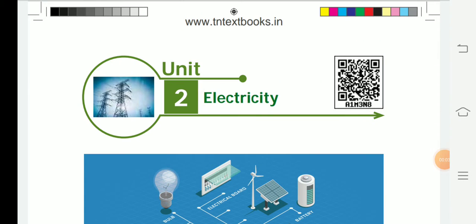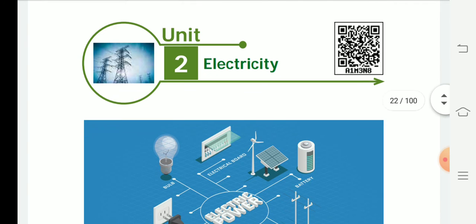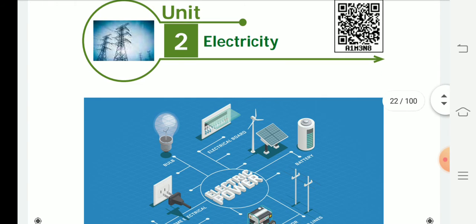Good afternoon students, welcome to our online class. Standard 6th Science, Unit 2: Electricity. Electricity is a type of energy that we use to make heat, light, and to power machines. It is a flow of electric charge. Electricity is all around us, powering technology like our cell phones, computers, and lights.